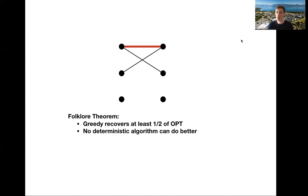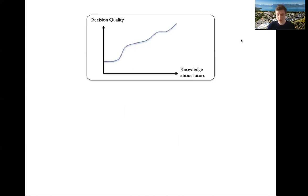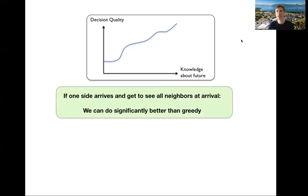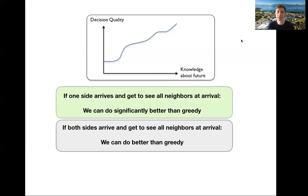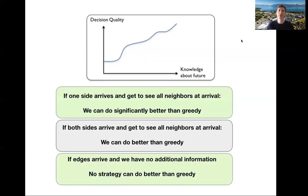However, it was open whether randomization could help. And here we also settle this question by proving that even if you allow for randomization, you cannot beat one half. So to summarize, we have analyzed how good decisions can we make with limited knowledge about the future. And since the 1990s, we knew tight answers for one side vertex arrivals. Now we know that we can do better than greedy for two side vertex arrivals. And we also answer the question for the most general case that here, in fact, greedy is optimal.